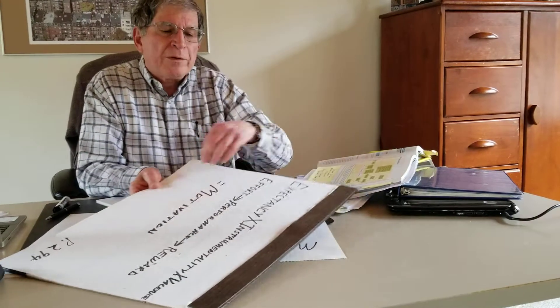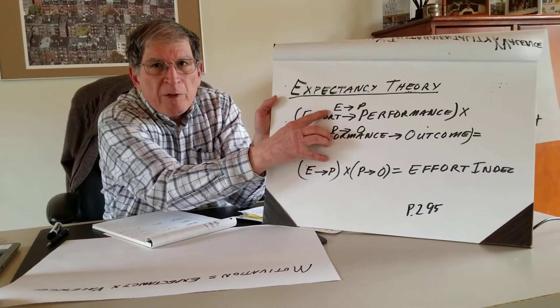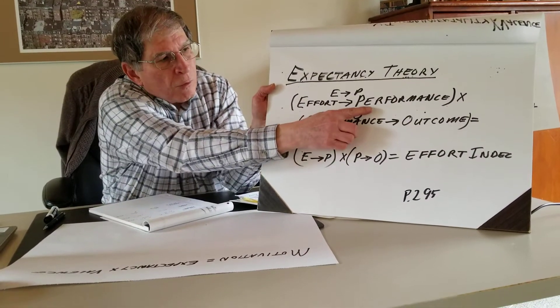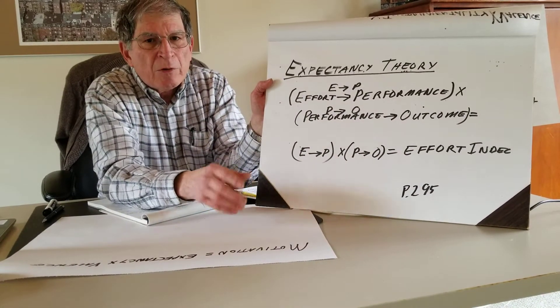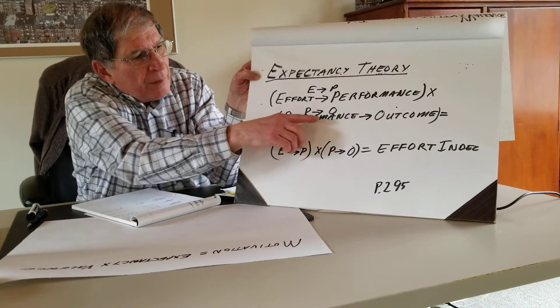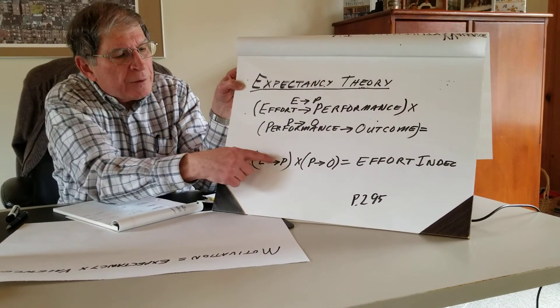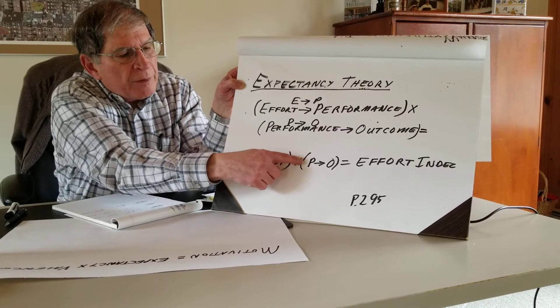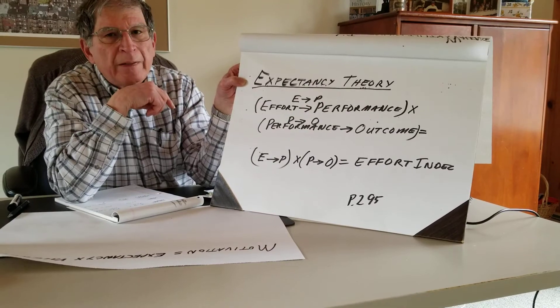Taking it one step further, how can you judge a group of people working for you? In expectancy theory, you have to get people to believe that their effort leads to some sort of performance. If they don't believe that, it's going to be almost impossible to motivate them. On top of that, the performance has to lead to some sort of outcome — a reward of some kind. Effort leads to performance; performance leading to outcome gives us what we call the effort index.